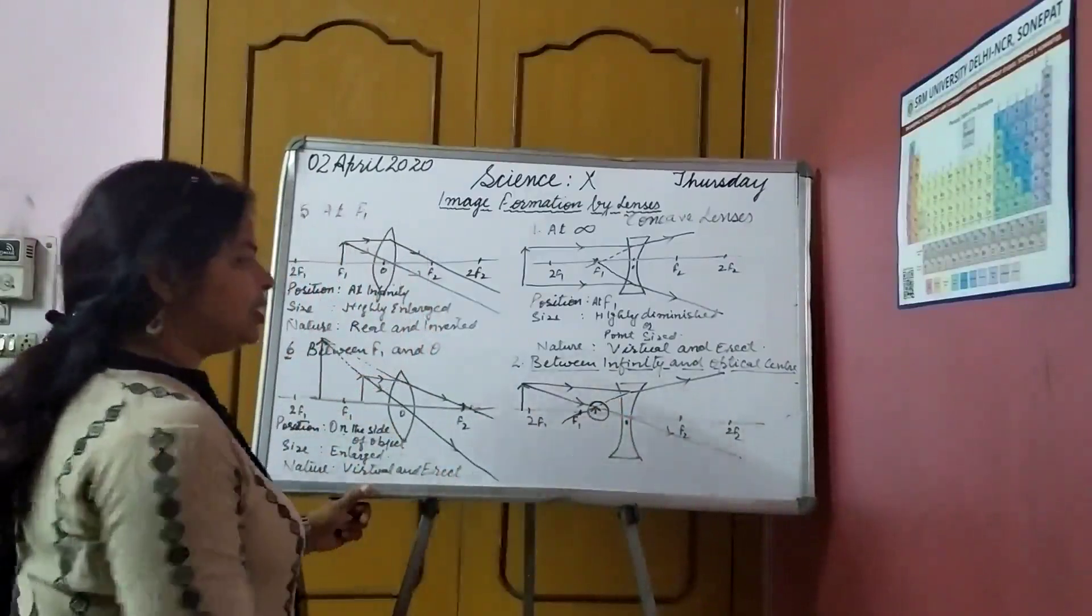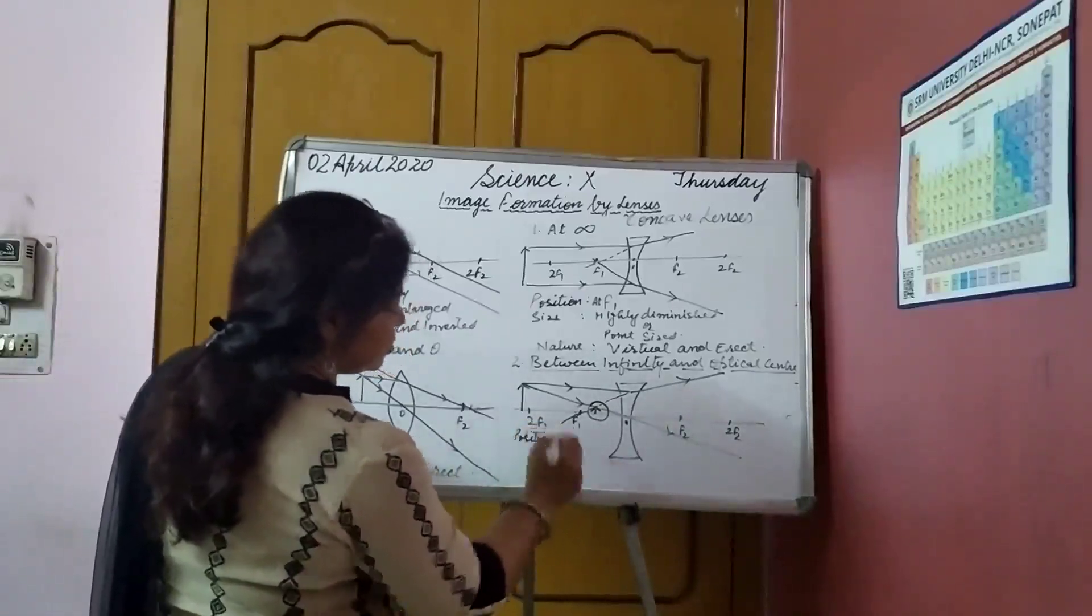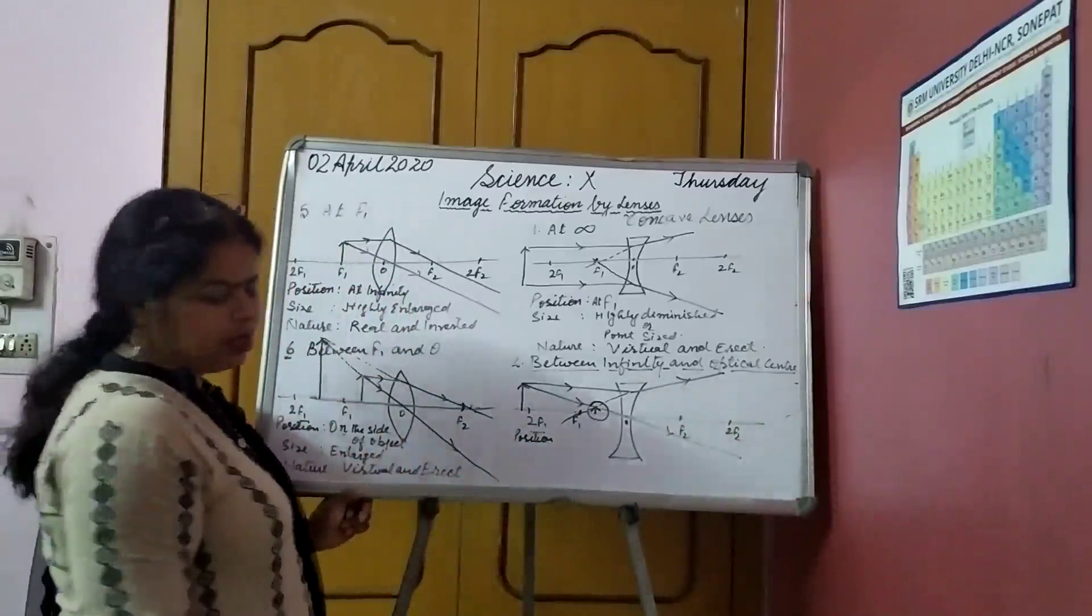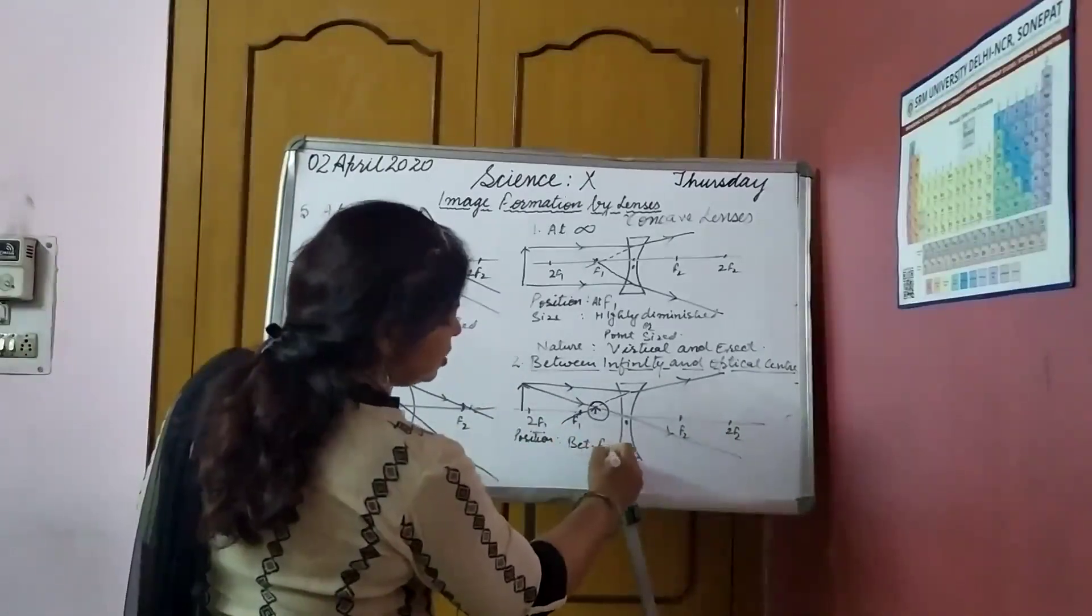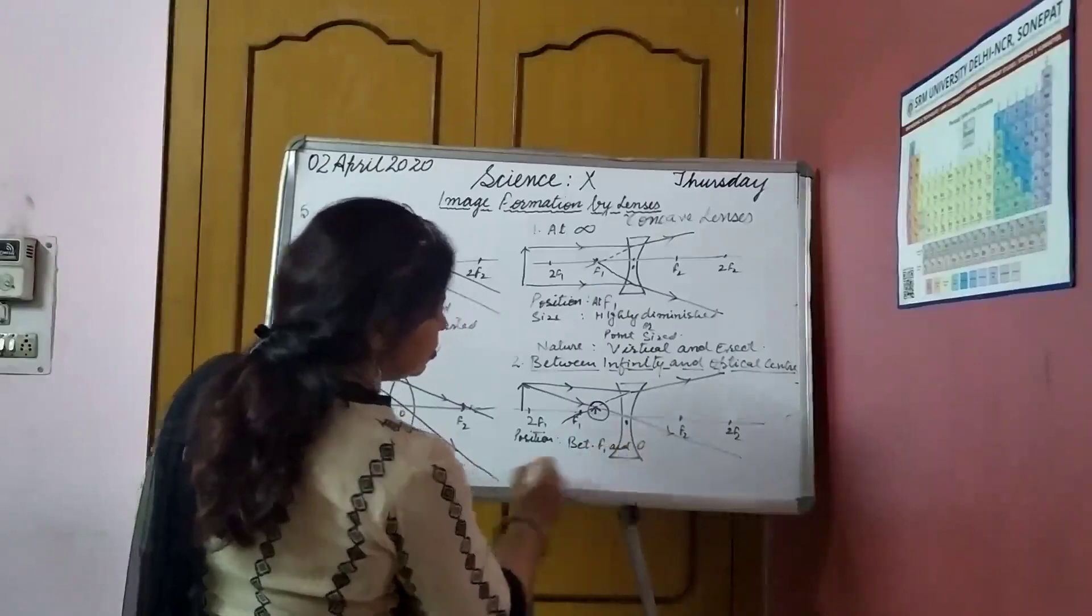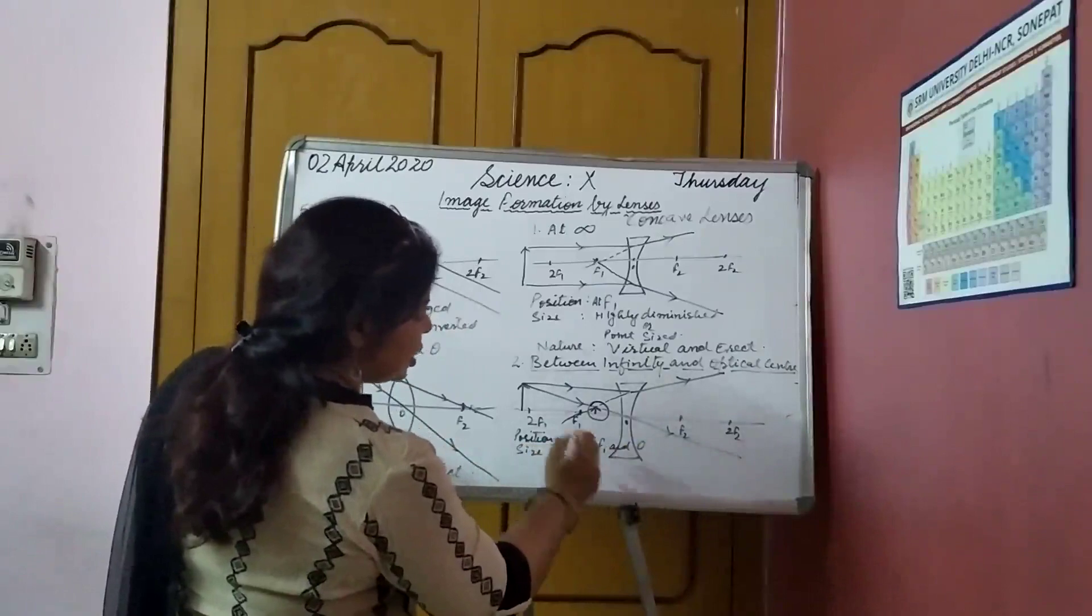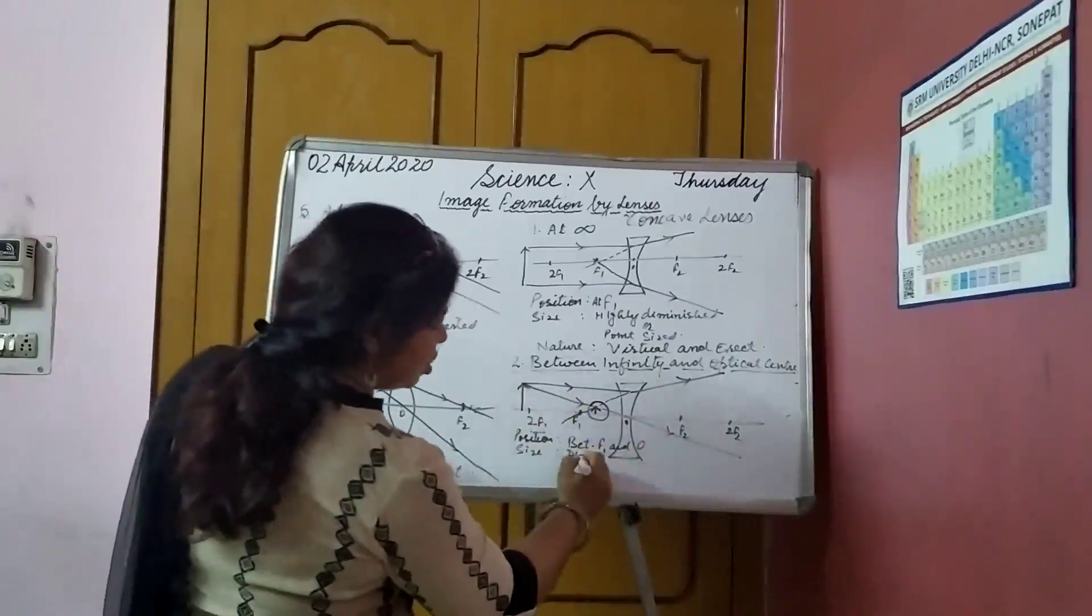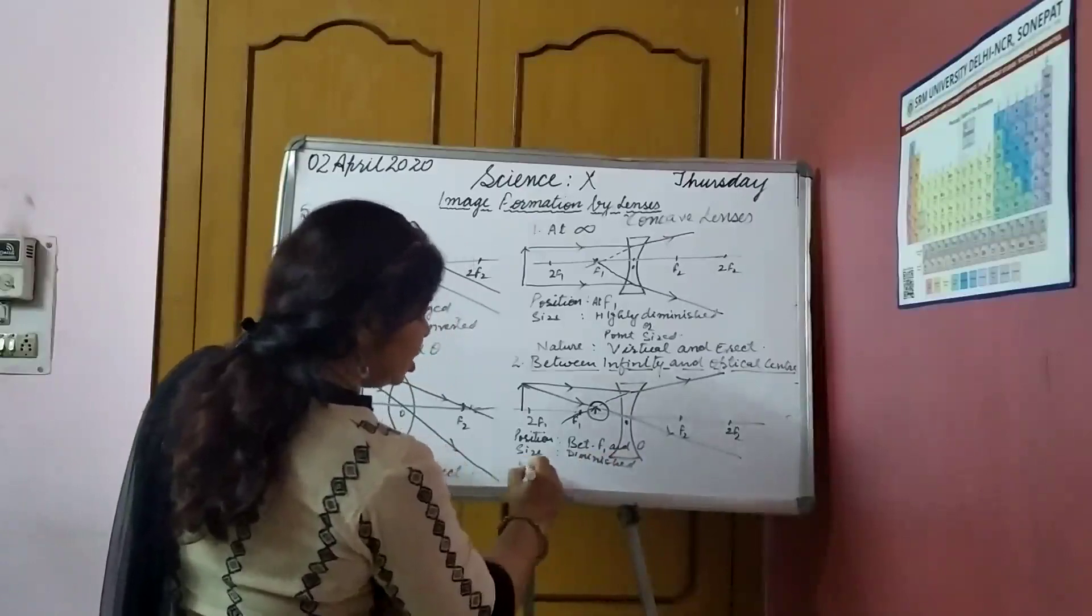So, what is the position? What is the position? We can write between f1 and o. Size. Diminished. As compared to the object, it is very small. Diminished. And the nature.